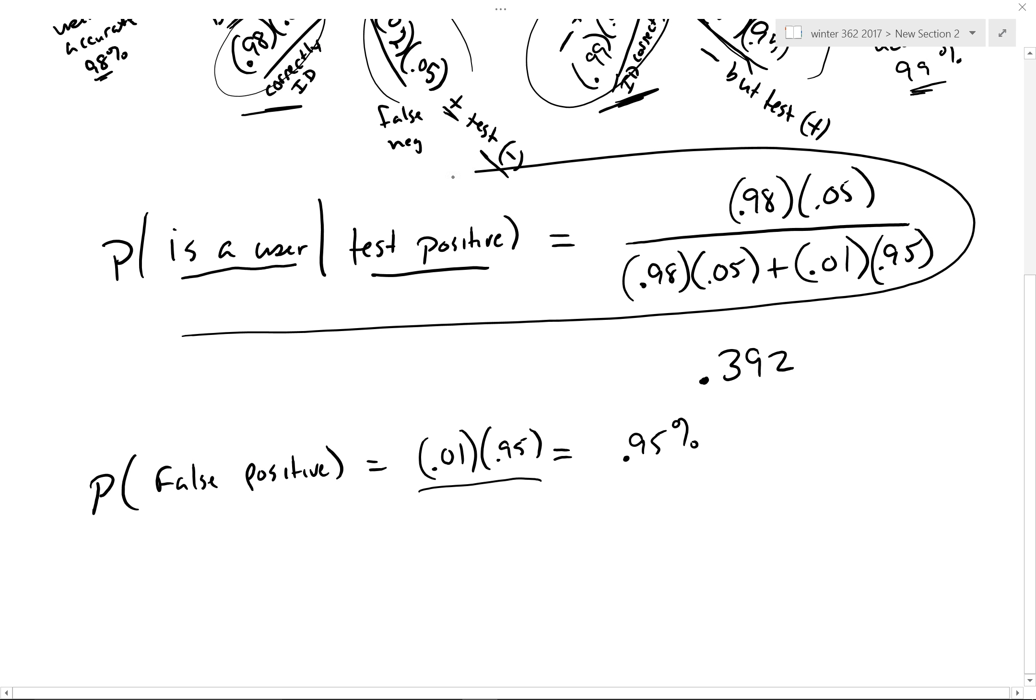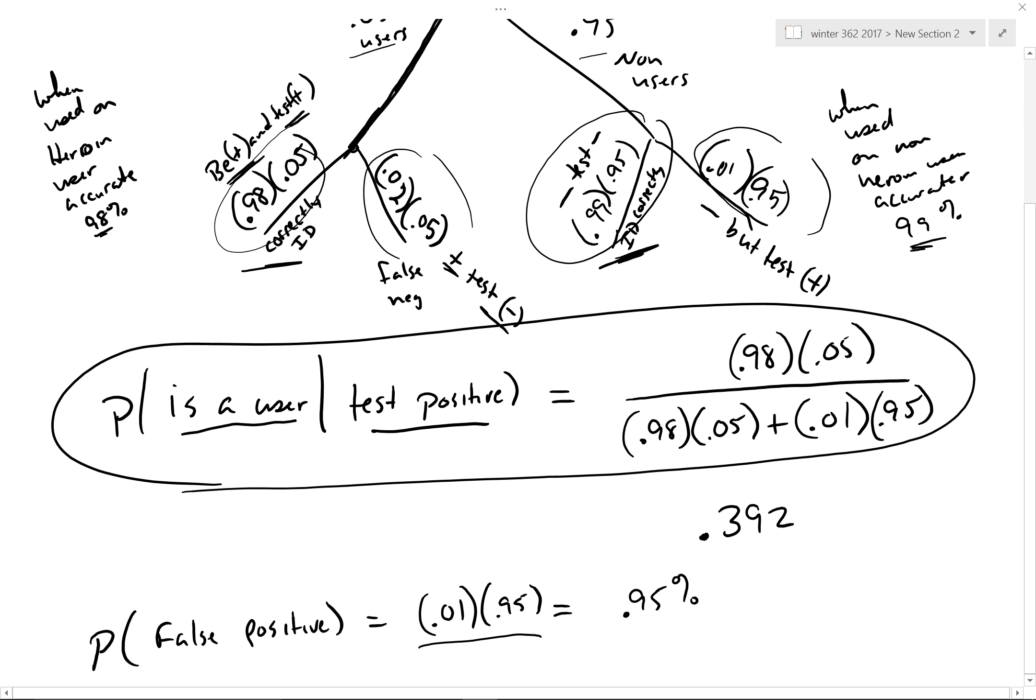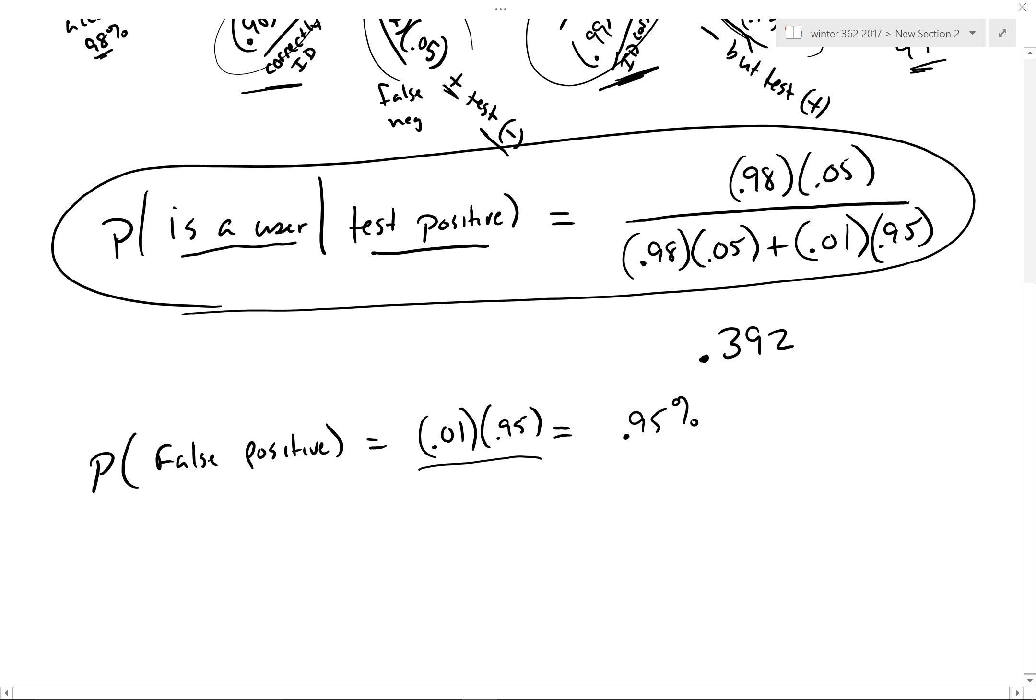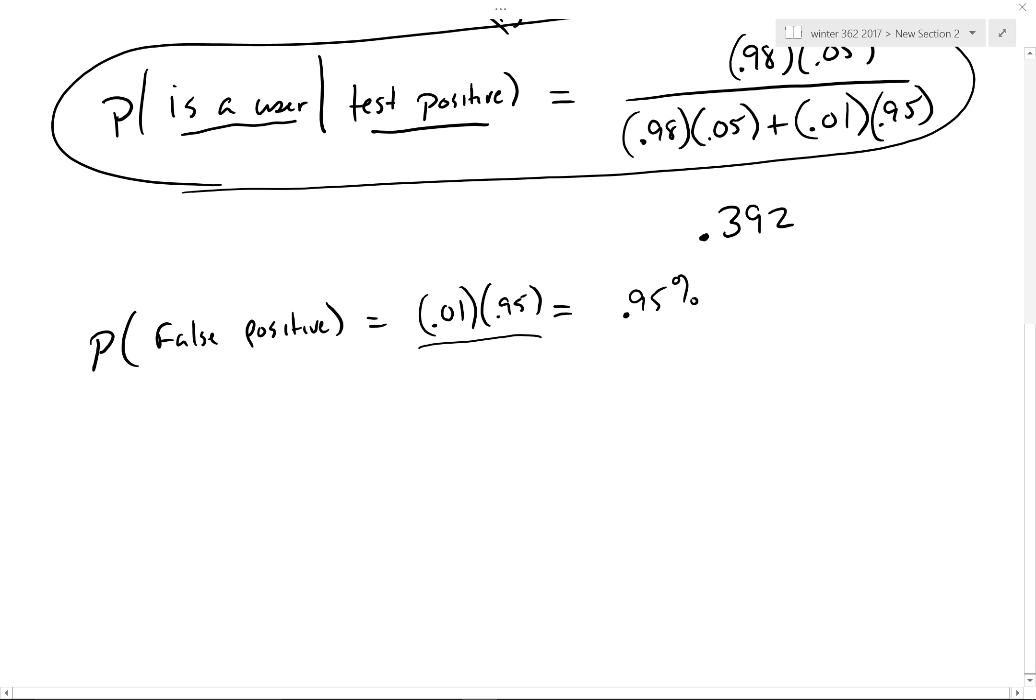This part up here is Bayes theorem of course. But once you have this tree diagram set up, you can play the game down here with anything, just the false positives for instance.